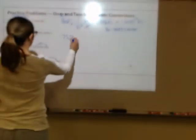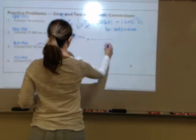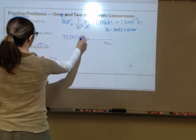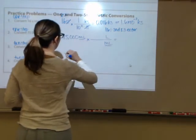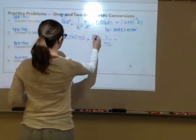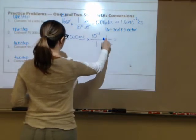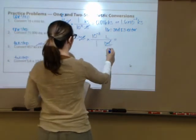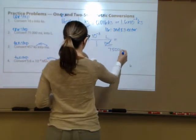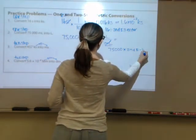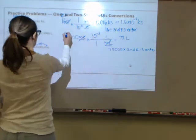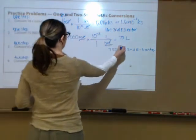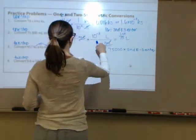Number two: 75,000 milliliters into liters. You are given 75,000 milliliters; this unit goes on the diagonal; liters goes on top; number one next to the prefix milli; 10⁻³ goes next to the base unit. Multiply across: 75,000 × 2nd EE negative 3 = 75 liters. Two sig figs in, two sig figs out. The number one and the power of 10 are exact.